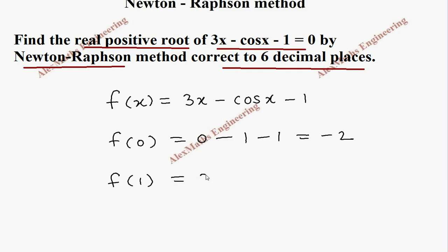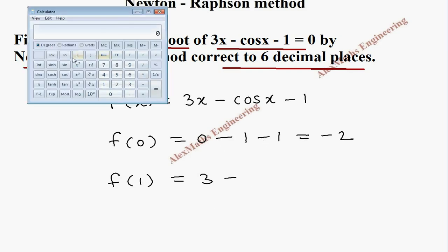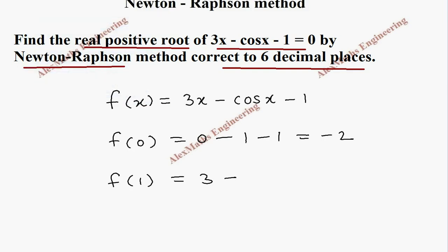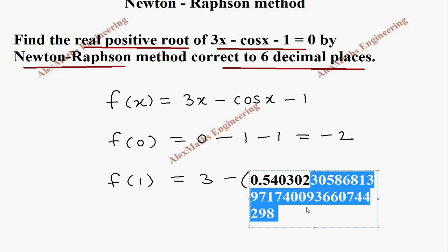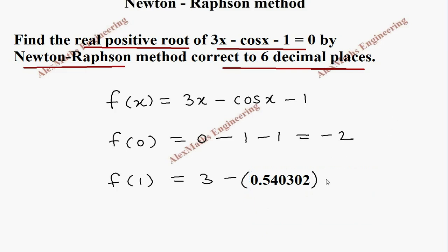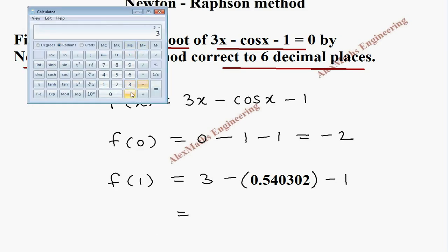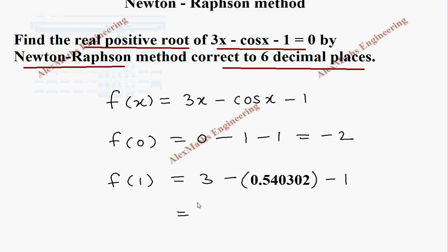Let's find f(1). The first term is 3 minus cos 1. Change to radian mode in the calculator. cos(1) = 0.5403. We need 6 decimal places, so cos(1) = 0.540302. So f(1) = 3 minus 0.540302, then minus 1.